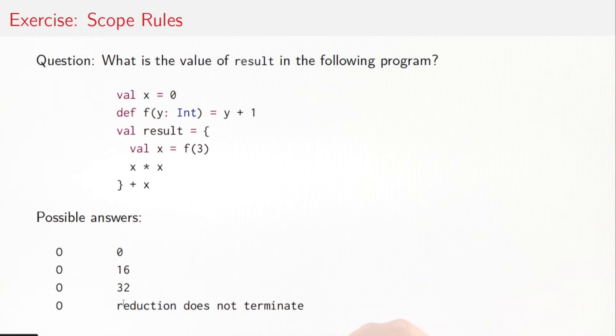So let's see how we would find the answer to that one. If we look at the value of result, then what we see is that the first thing we do is we compute a value of x to be f of three. f is this function here. It adds one to its parameter, so that would give x the value of four.